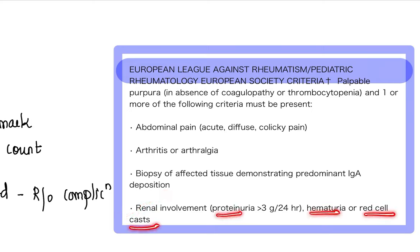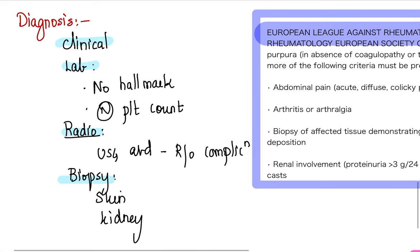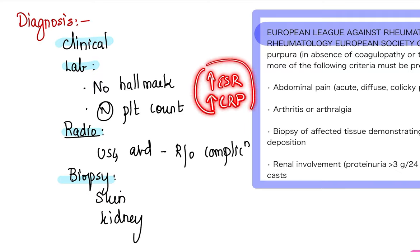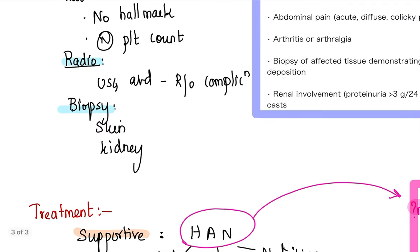If one among the four is present along with the palpable purpura in the absence of coagulopathy or thrombocytopenia, then you classify it as a classical HSP. Lab findings: you make sure there's no thrombocytopenia or coagulopathy. Some mild anemia, mild elevation in ESR, CRP. It's basically a vasculitic state, so these findings are expected.